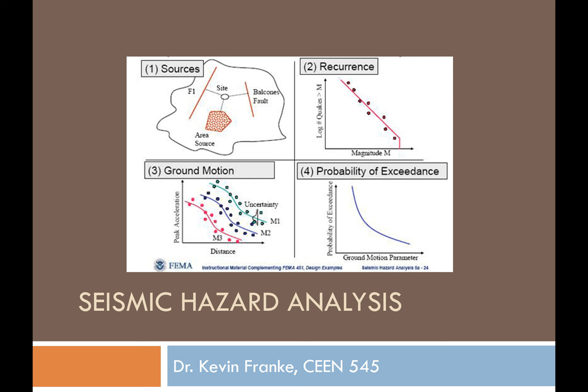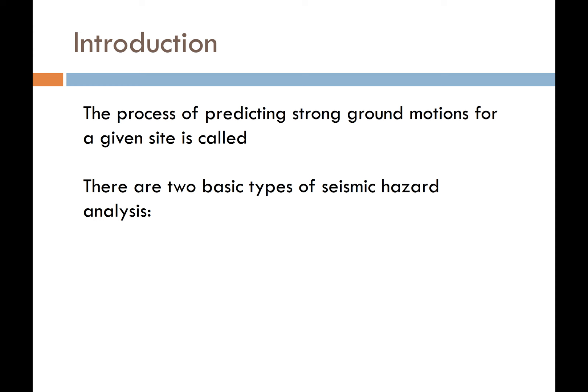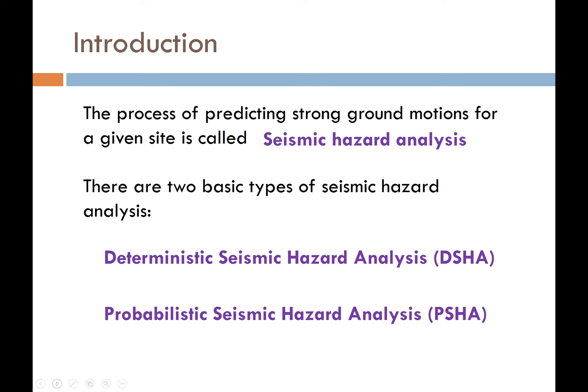When I say seismic hazard analysis, what I'm talking about is the application of attenuation relationships to predict ground motions for a particular site. That's really all a seismic hazard analysis is — the process of predicting strong ground motions for a given site. We're going to discuss two types: deterministic, or DSHA, and probabilistic, or PSHA.